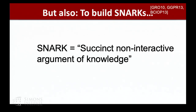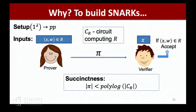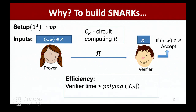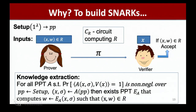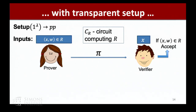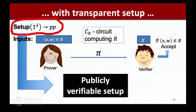What is a SNARK? It is a proof where the prover proves that he knows the witness to some relation — we often talk about circuits — so it knows inputs to the circuit such that it's true. We want the succinctness property that the proof is very short. We also want efficiency: the verification time should be short, ideally polylogarithmic. And we want an extraction property saying that there exists an extractor which can extract the witness from a prover that succeeds with non-negligible probability.